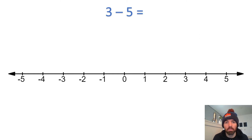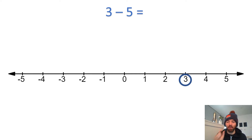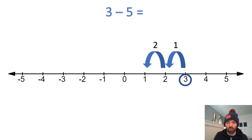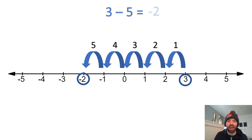So I've got a quick maths problem for you. I've got three take away five — what does three take away five equal? To do this, we need to find the number three on that line. And now we're taking away five, so we have to jump back five spaces. One, two, three, four, five. What have we ended up on? Negative two. We've ended up at negative two. So three take away five is negative two, or minus two — either or.